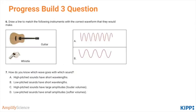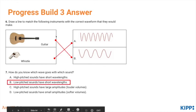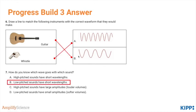Questions six and seven assess progress build three about amplitude and wavelength. You should have matched the guitar with waveform B because it has a lower frequency and thus a longer wavelength, and the whistle with A because it's high-pitched with a much shorter wavelength. Low-pitched sounds have longer wavelengths — not to be confused with amplitude, which is the height of the wave and relates to volume.